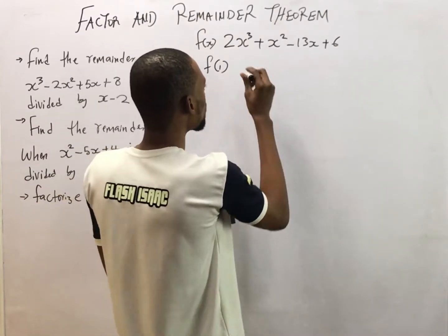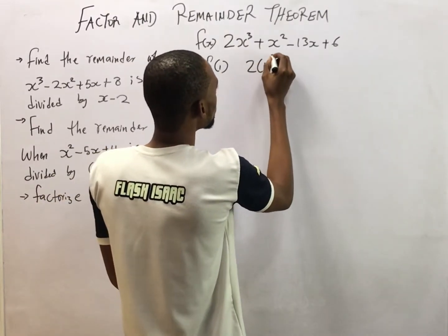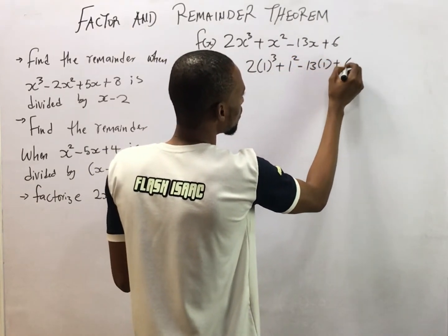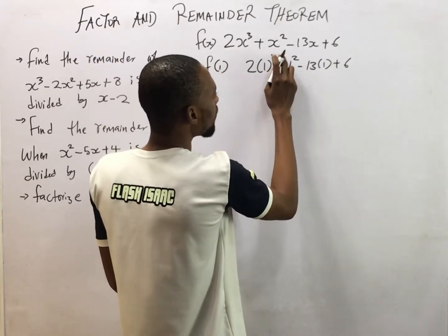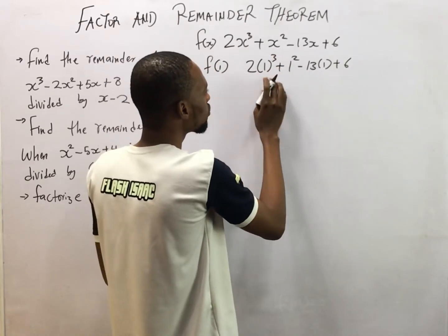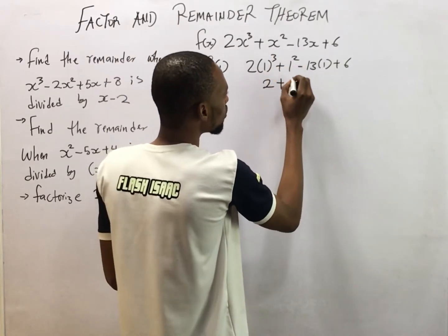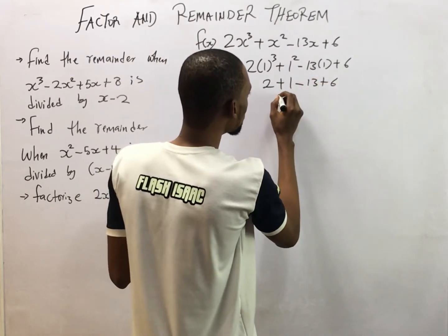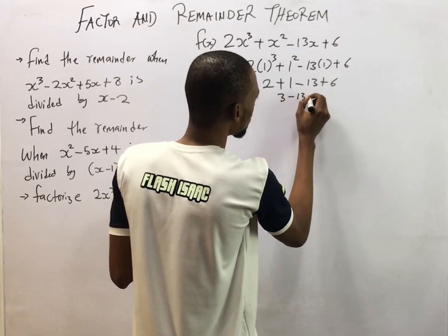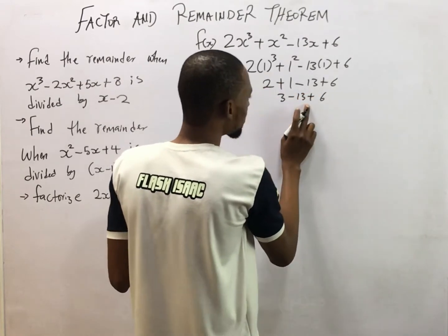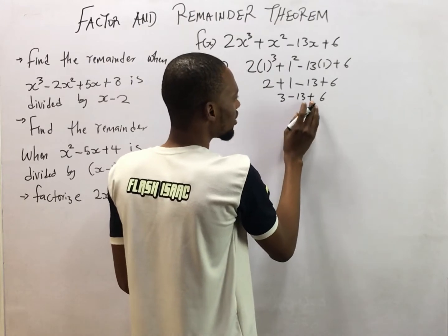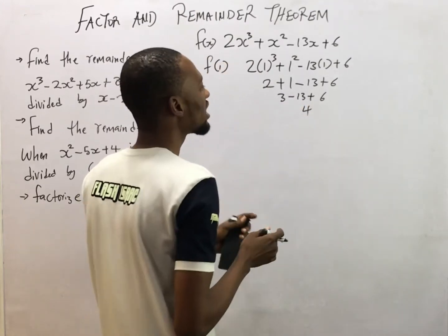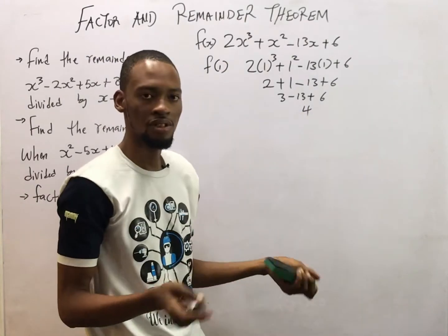Putting 1 in this expression, we have 2 times 1 to the power of 3 plus 1 squared minus 13 times 1 plus 6. 1 to the power of 3 is 1. 2 times 1 is 2 plus 1 squared is 1 minus 13 plus 6. This will give you 3 minus 13 plus 6. 3 minus 13 is minus 10. Minus 10 plus 6 is 4. So 1 is not a factor because the remainder is not 0.